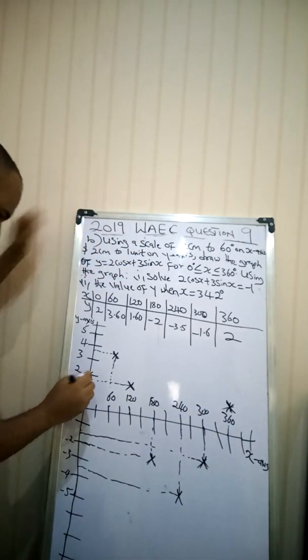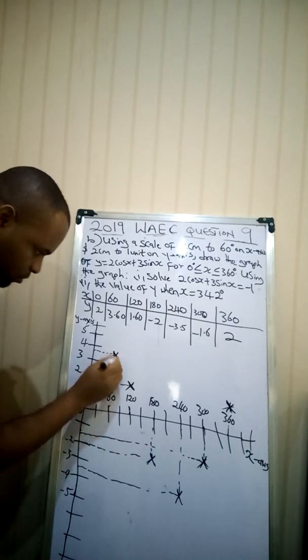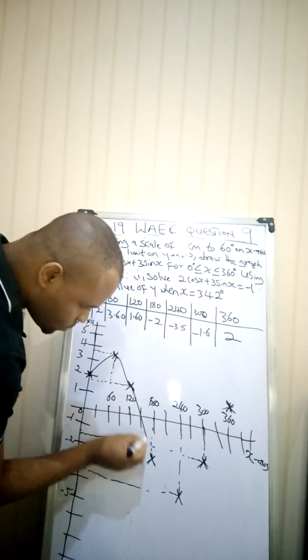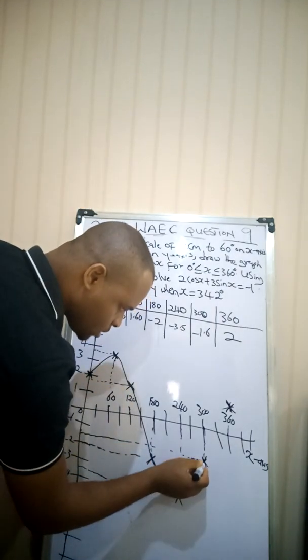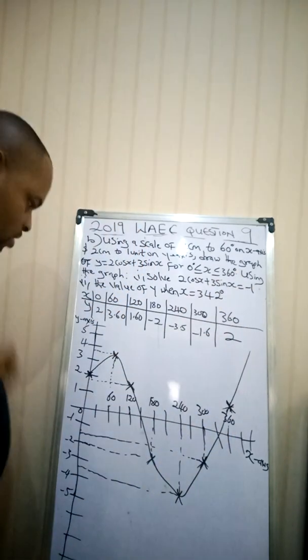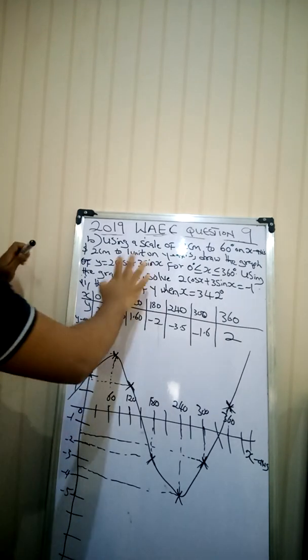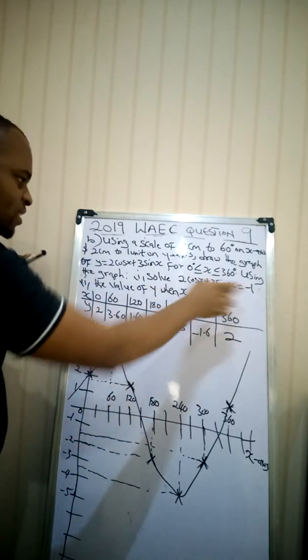Alright, the next thing you now join your graph. Do it like a curve. Comes this way, goes this way. So this is how your graph will look like. Hope I didn't miss out any points here. So this is how your graph will look like. You can decide to still drag here down. Now, we've drawn the graph which is the first part of the question. The second one now says use the graph to solve this.